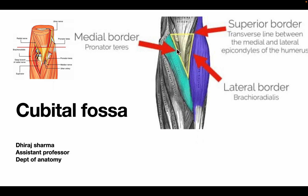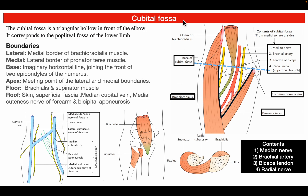Today's topic is regarding the cubital fossa, its boundaries, contents, and some of the clinical aspects related with it. The cubital fossa is a triangular hollow which is present in front of the elbow joint. It also corresponds to the popliteal fossa of the lower limb.